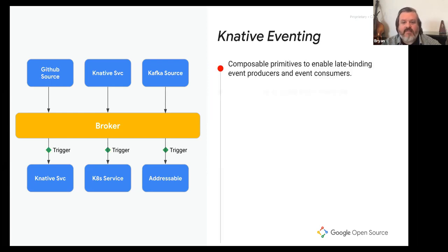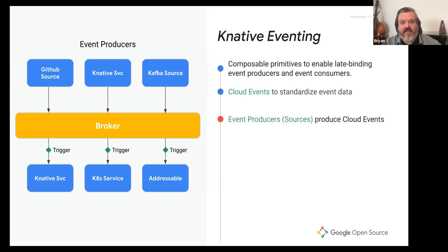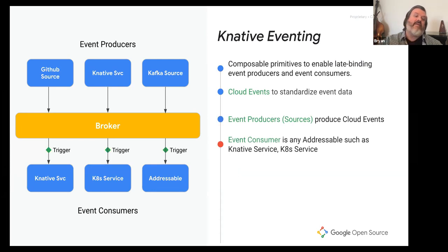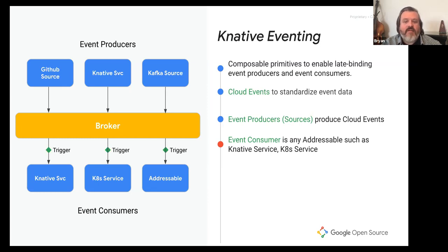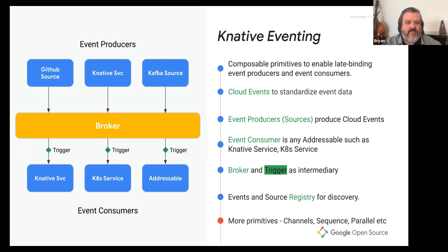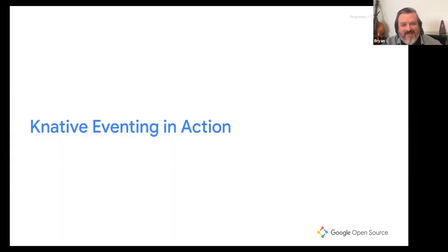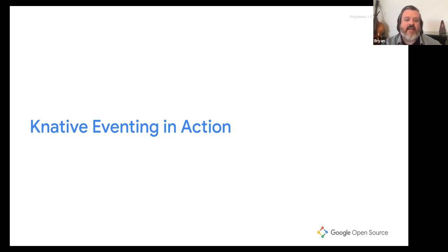Another key concept is the event source registry, which is important for developer experience — rather than having every developer learn from scratch what events and sources are available, a registry lets you discover what can be added and what events can be reacted upon. There are more primitives to consider such as sequences, channels, and flows, which we'll discuss later. Now let's see this in action — I'll hand things over to Nick, who will show how this works in real life.